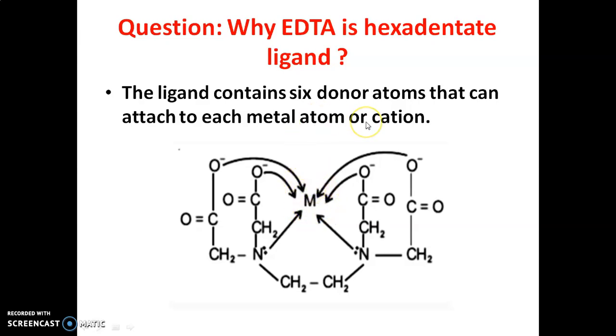Therefore, it is called hexadentate ligand. It donates electrons to the central metal atom. The donor atoms are six: out of six, four from the oxygen, two from the nitrogen. Therefore, it is called hexadentate ligand. This is EDTA.